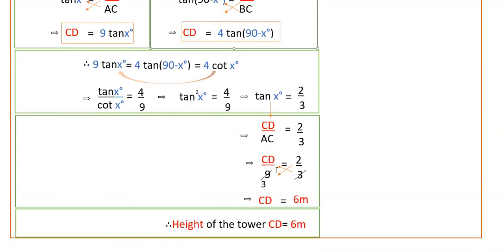Therefore, if you cross multiply here, CD is equal to 2 times 3 is 6 meters. Therefore height of the tower, that is CD, is equal to 6 meters.